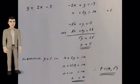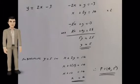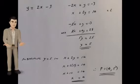Plug that value of y into any one of the equations and we can solve and find that x equals 4. So the point of intersection is the point P, (4, 5).